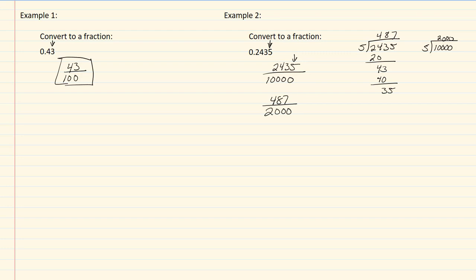Since 487 is not divisible by two or five, I know that I'm done reducing. So my answer is 487 over 2,000.